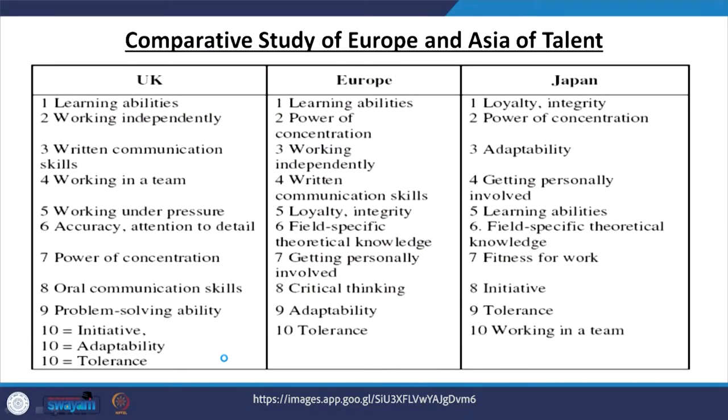This is a comparative study of Europe and Asia talent. A study covering UK, Europe, and Japan found that talent is characterized by learning abilities. Those deciding in the UK have faster learning abilities. Similarly, in Europe, learning abilities are prominent. In Japan, however, the topmost attribute found is loyalty and integrity with the organization — a very important Asian cultural aspect.